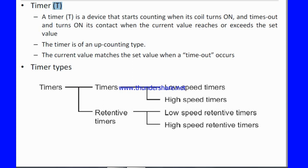I will explain the timer — it is of two types. First is the standard timer, and the second is the retentive timer. In the timer, a low speed timer and high speed timer are also available. The retentive timer has battery backup, so you can save the timer value even after power off.